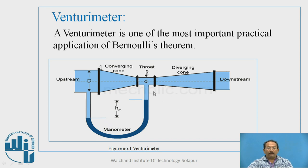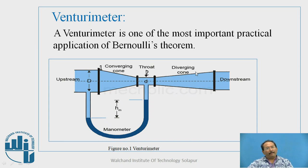It is one of the most important practical applications of Bernoulli's theorem. You can observe this particular instrument attached in a fluid mechanics laboratory. This is a pipe in which the diameter is reduced here — this is the least diameter — and then again the diameter is increased. This section is the inlet section, and this other end is the outlet, or we can say it is upstream and this is the downstream.